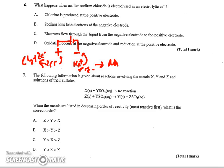Electrons flow through the liquid from the negative electrode to the positive electrode. That's not true either. They're actually going to be flowing through the wire on the external circuit. It's going to be the ions flowing in the liquid. And then D, oxidation occurs at the negative electrode. No, that's reduction going on as sodium is reduced to a positive metal.